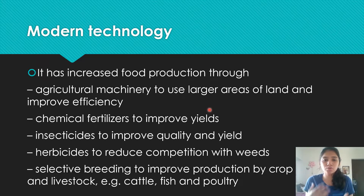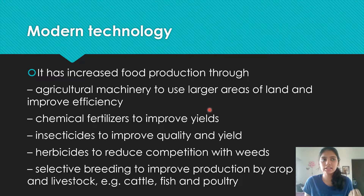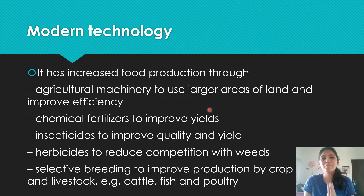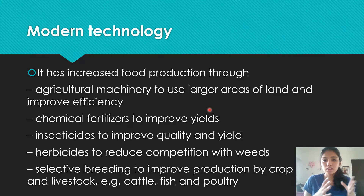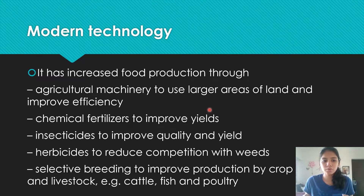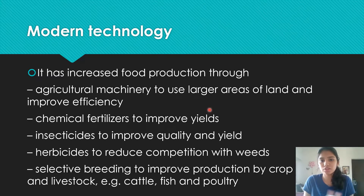Then we have insecticides that improve quality and yield, and herbicides that reduce competition with weeds. When insecticides are sprayed on a plant, they target insects that feed on the plant. When those pests are killed, the plant is able to grow more and produce a greater yield. Herbicides target weeds growing between crops — killing them reduces competition for resources and nutrients, so all the nutrients can be used by the crops.